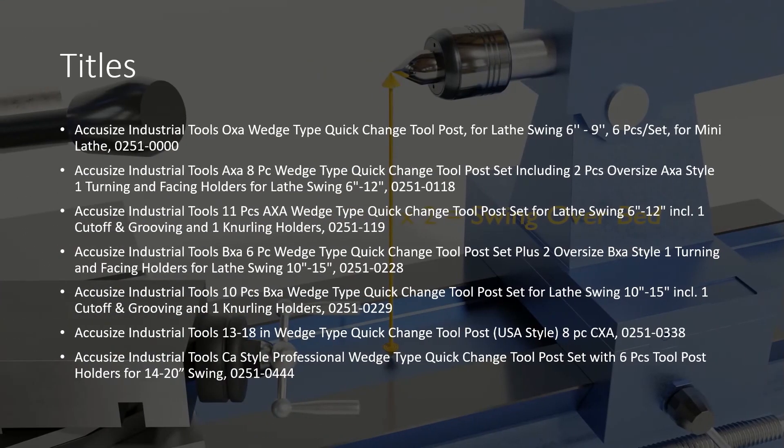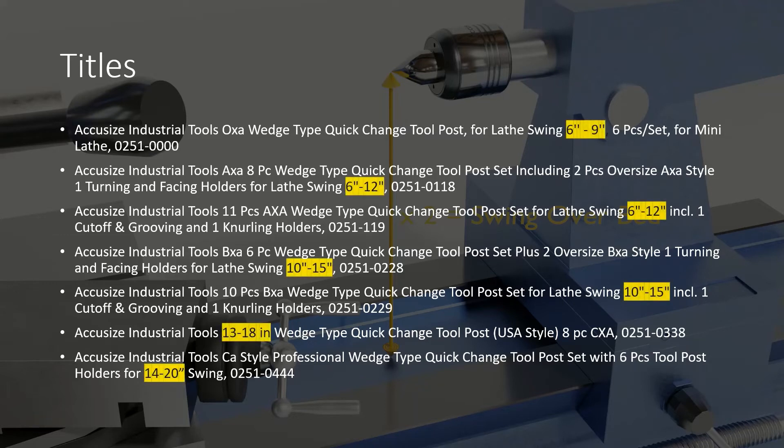On the other hand, you may check the titles of the AccuSize quick change tool post listings. The titles have the swing over bed sizes for which they are suitable. That should be good enough for most cases.